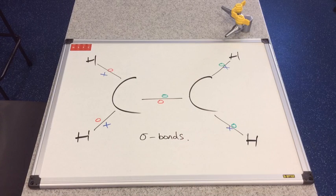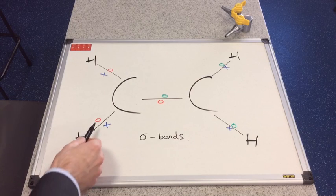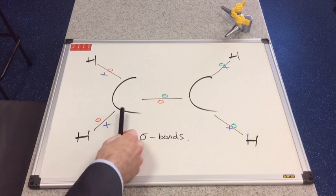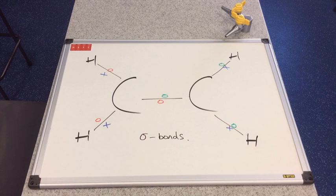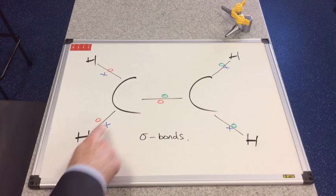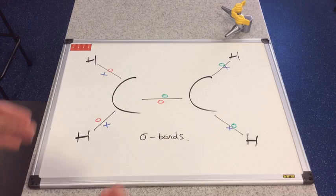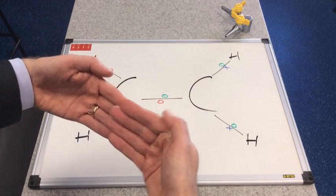Now, it gets quite complicated explaining what sigma bonds are. But one way to think about it is, you know that all the electrons are in orbitals. And when a covalent bond is formed, the orbitals overlap. And the pair of electrons is effectively shared between the two atoms. Now, sigma bonds are formed when orbitals overlap end to end. Like that.